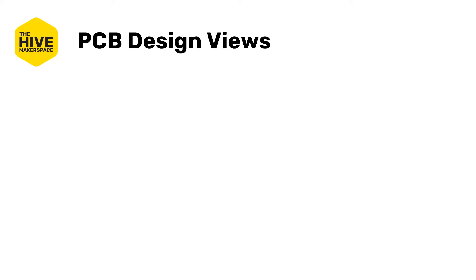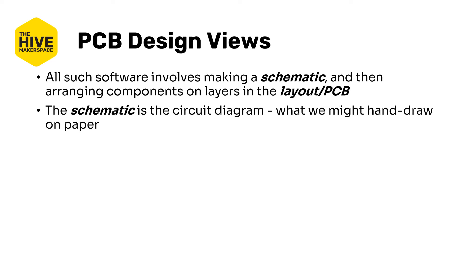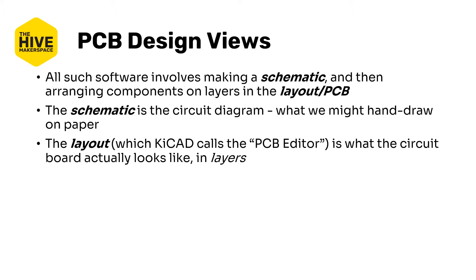PCB CAD software uses two primary views: the schematic and the layout, which can also be called the PCB view. The schematic is for the circuit diagram — what might be drawn on paper with symbols and lines for connections. The layout is the physical design of the board in layers: the size and placement of components, the actual location of routes, and the mechanical constraints.